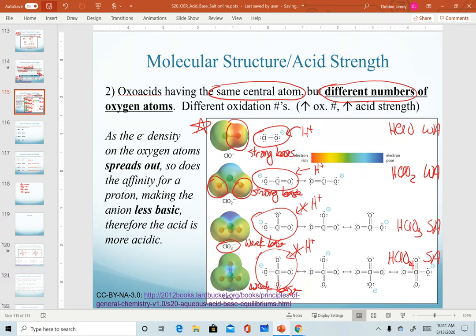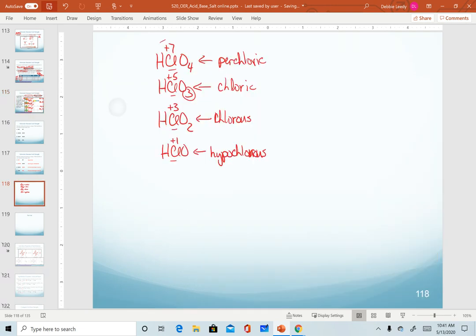If we go back to our oxidation numbers, same justification as electronegativities. This plus seven is going to draw all of those electron densities in and weaken the bond for H. Same thing in here. That does not happen in HClO2 or HClO.